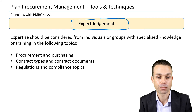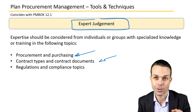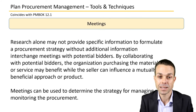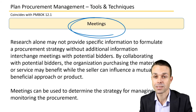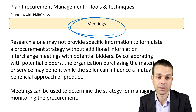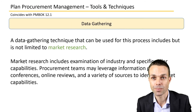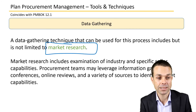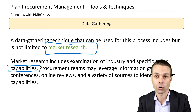Tools and techniques for plan procurement management include expert judgment from people with procurement and purchasing knowledge, the legal department for contract types and documents, and expertise on regulations and compliance topics. Meetings are also needed to tie all items together, since research alone may not provide specific enough information to formulate a procurement strategy. We may need to meet with potential bidders so they can showcase what they can do, and meetings can help determine the strategy for managing and monitoring the procurement. Data gathering through market research includes examining industry and specific seller capabilities without needing to go through a full bidding process.